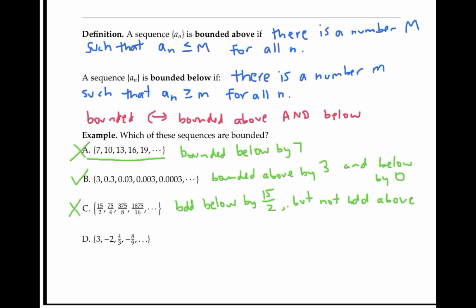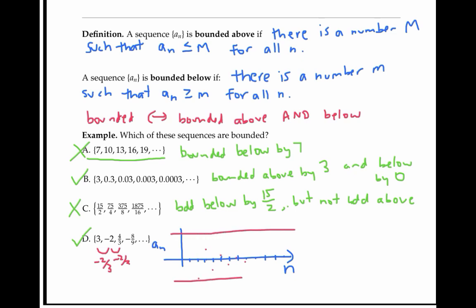Sequence D is bounded above and below. If we graph n on the x-axis and a sub n on the y-axis, the terms bounce around between positive and negative values. But since we're always multiplying by negative two thirds to get from one term to the next, the oscillations are dying down in magnitude. In fact, the terms can never get above three or below negative two.